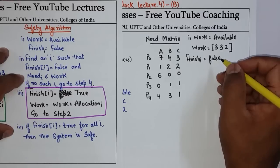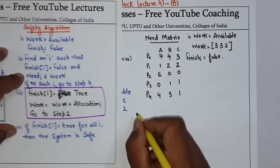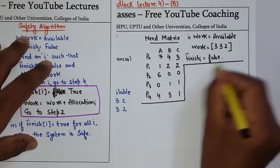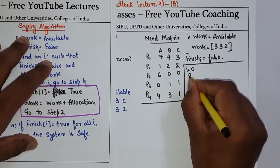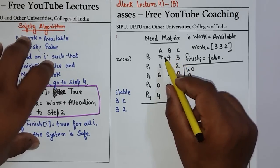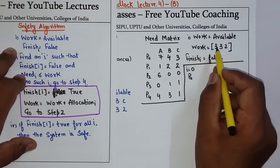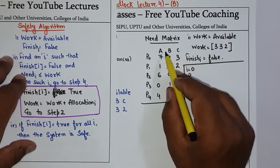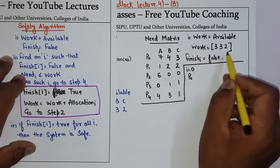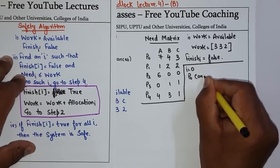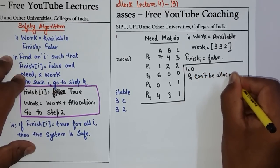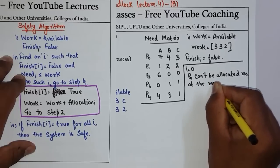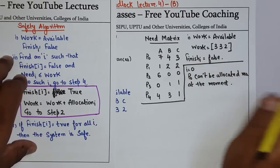We check one by one. For process P0 (i=0): P0's need is 7, 4, 3 and our current Work is 3, 3, 2. We check for each resource type A, B, and C — all must be less than or equal. But P0's need is greater than the current Work, which means P0 cannot be completed or allocated resources at the moment. Currently we cannot give resources to P0 because P0 needs more.